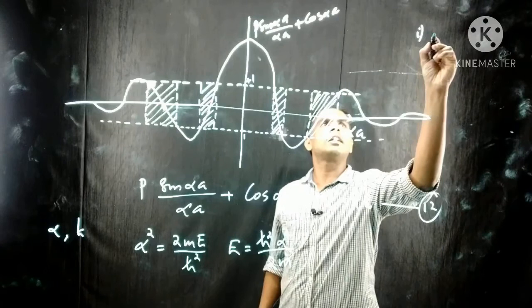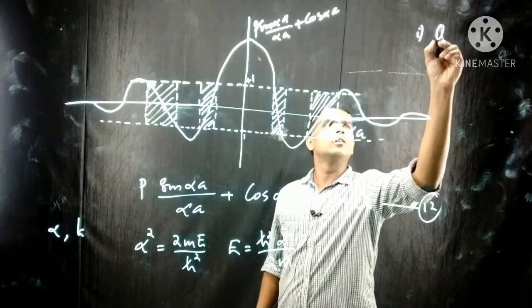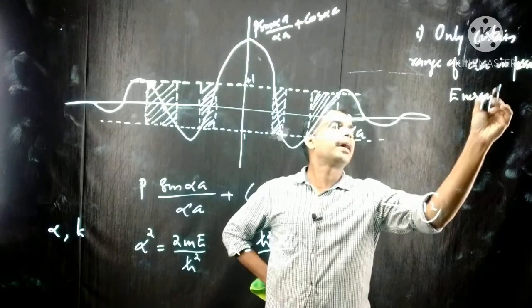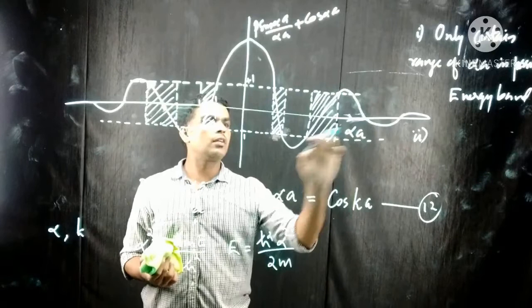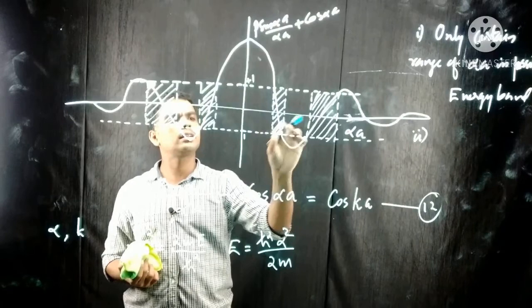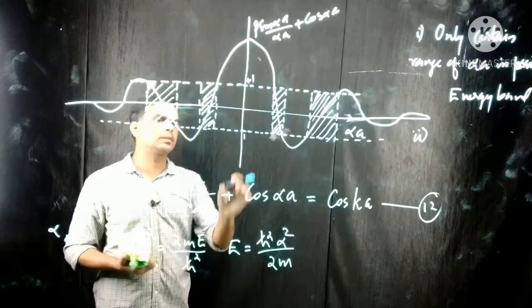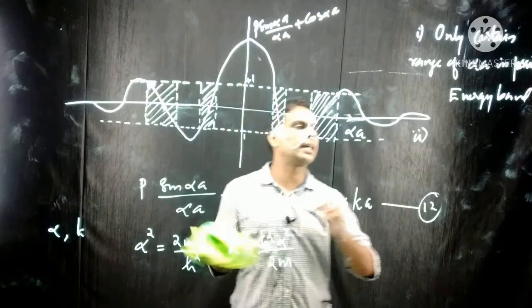First conclusion: only certain ranges of αa are allowed, which means only certain ranges of energy are possible — these are the energy bands, separated by forbidden regions called energy gaps. Second: as αa increases, the energy bandwidth increases and the width of the energy gap decreases.